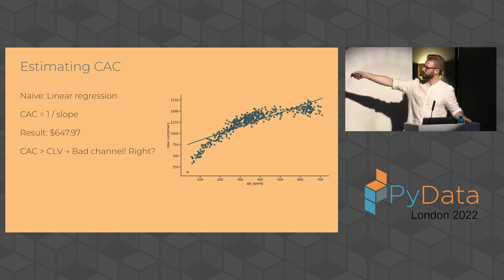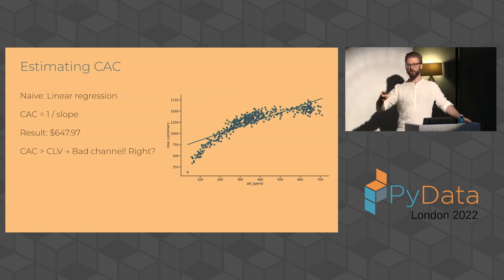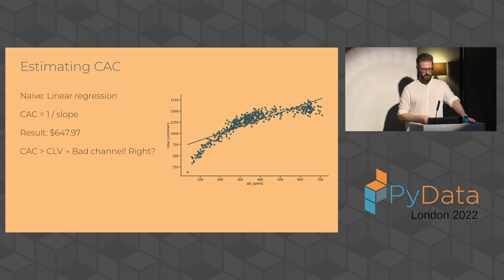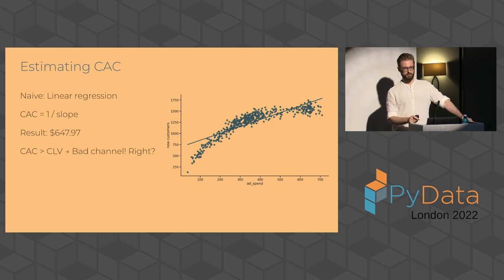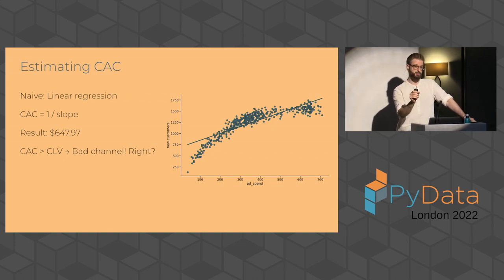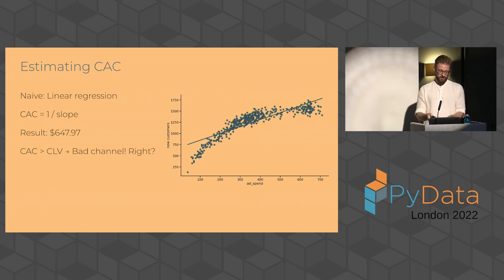But I want the inverse of that. I want to know, well, if I move one point here, how much do I have to spend for one new user? That's the CAC. So it's one over the slope. It's the inverse. And if I do that, it's just a single line and whatever stats package you want. And the result is 647.97 precisely. So amazing. With statistics, we get very precise answers.